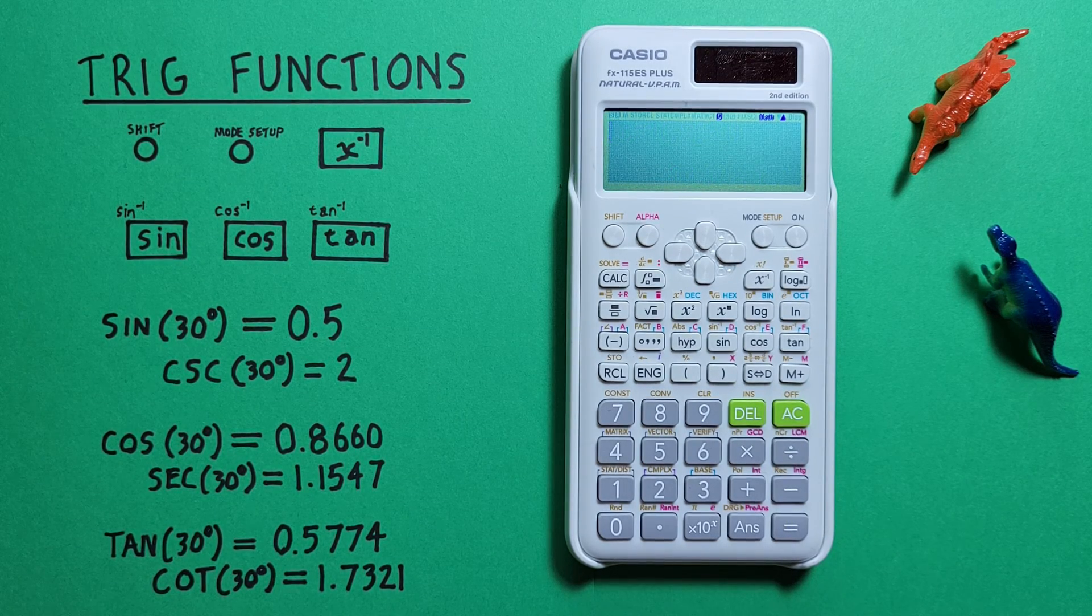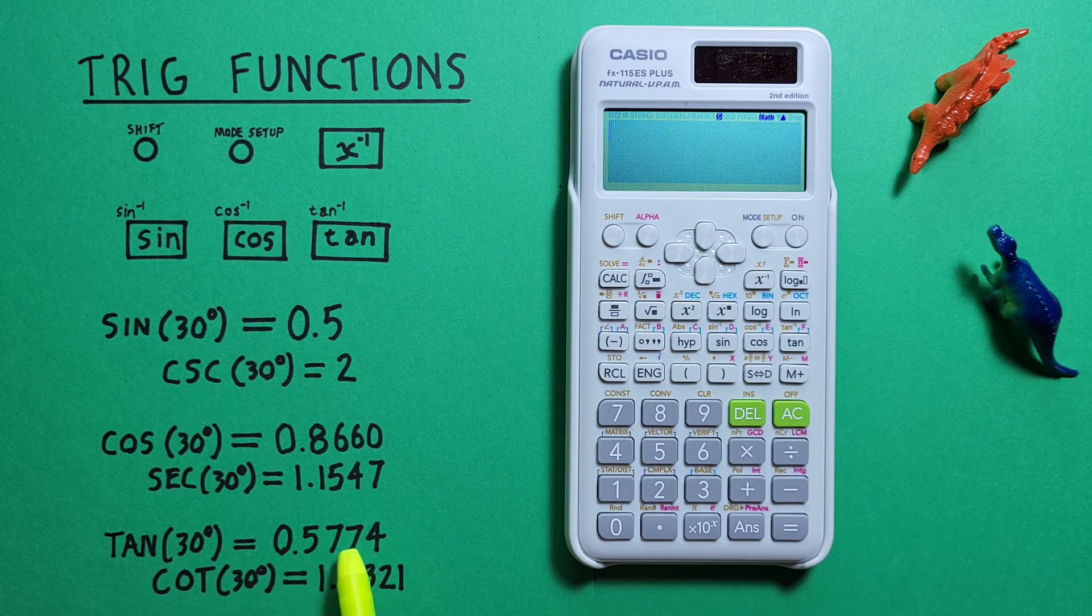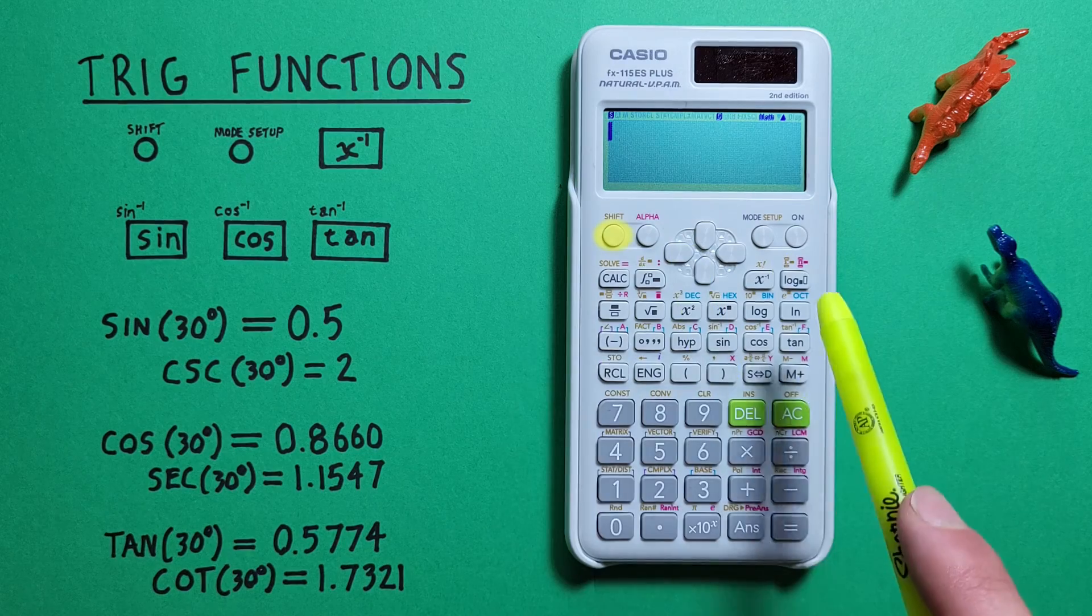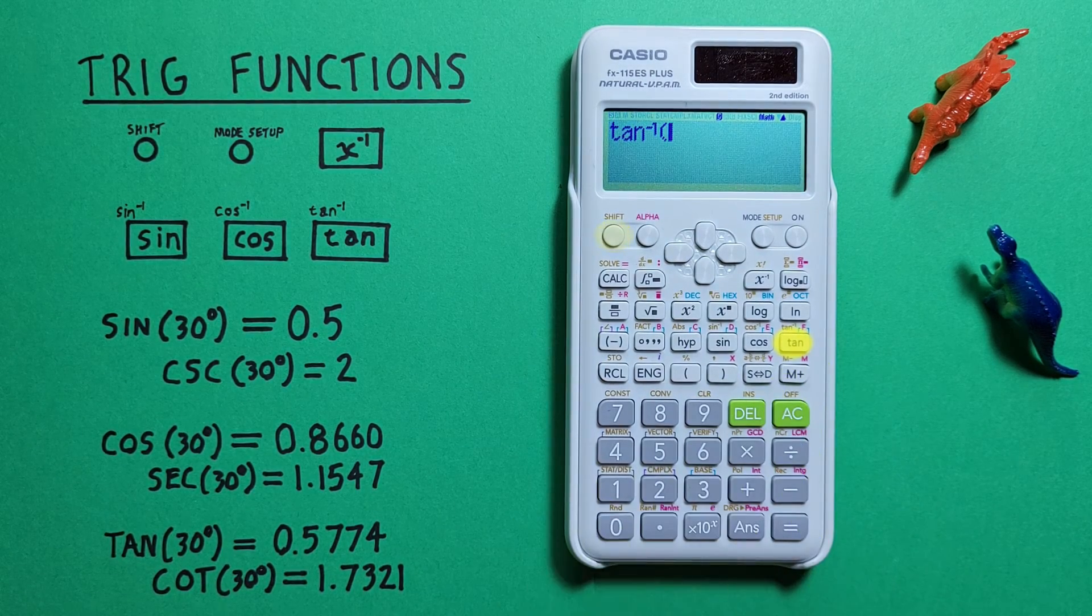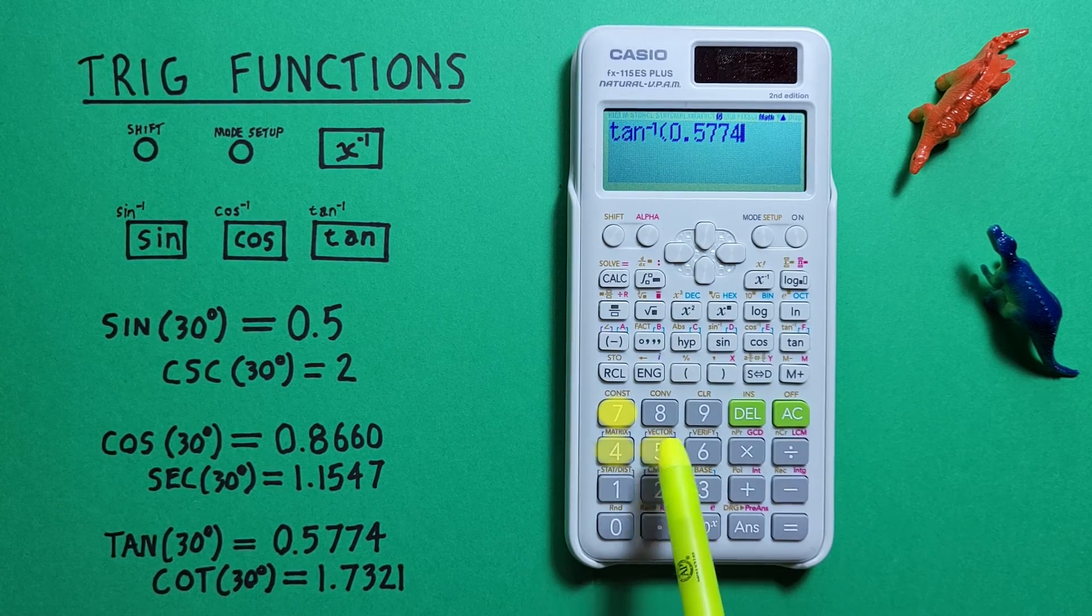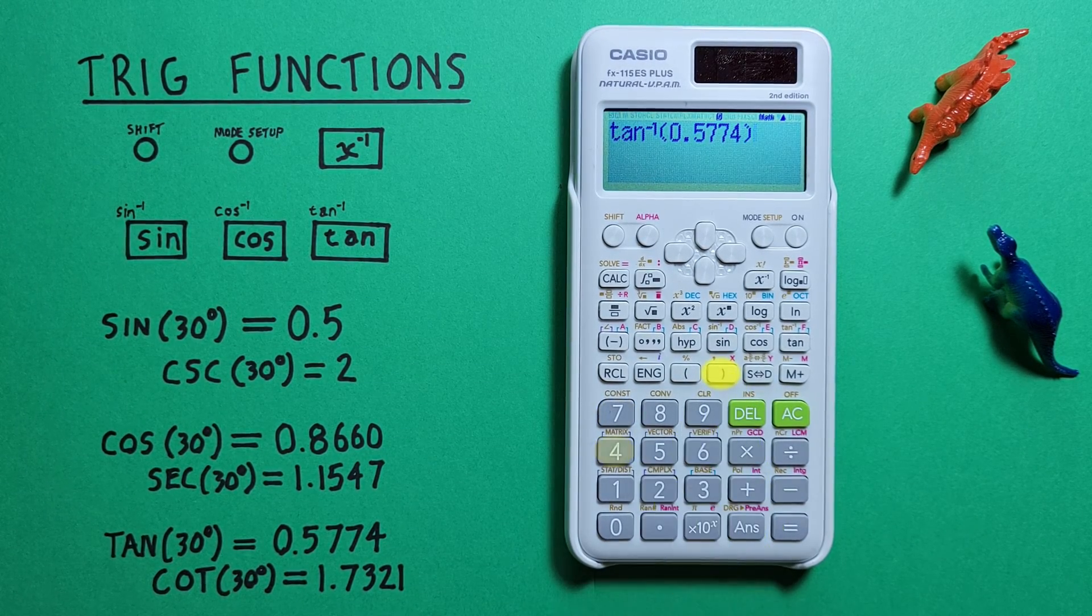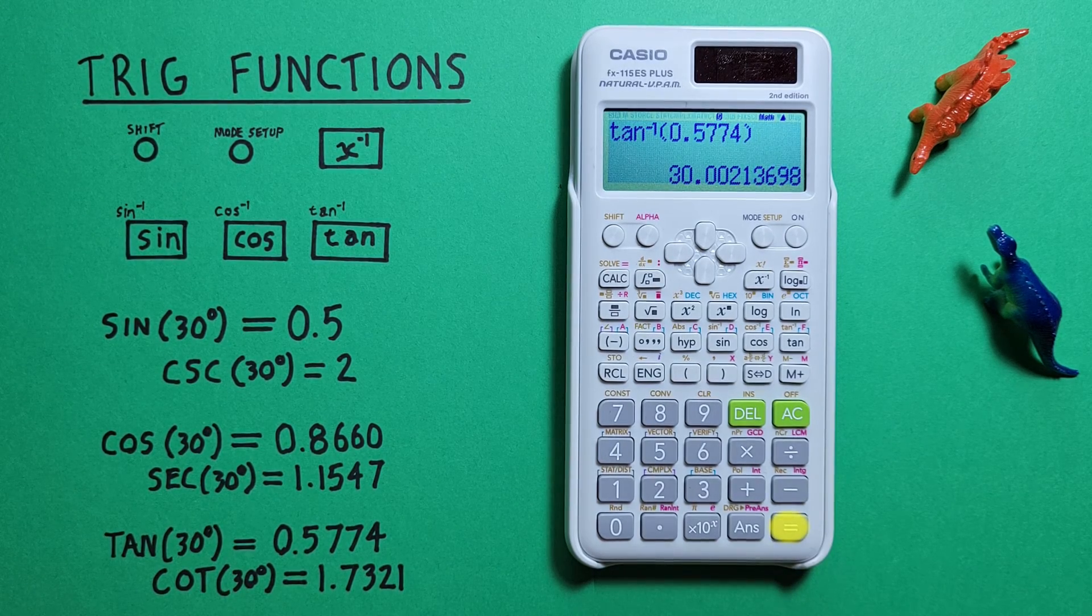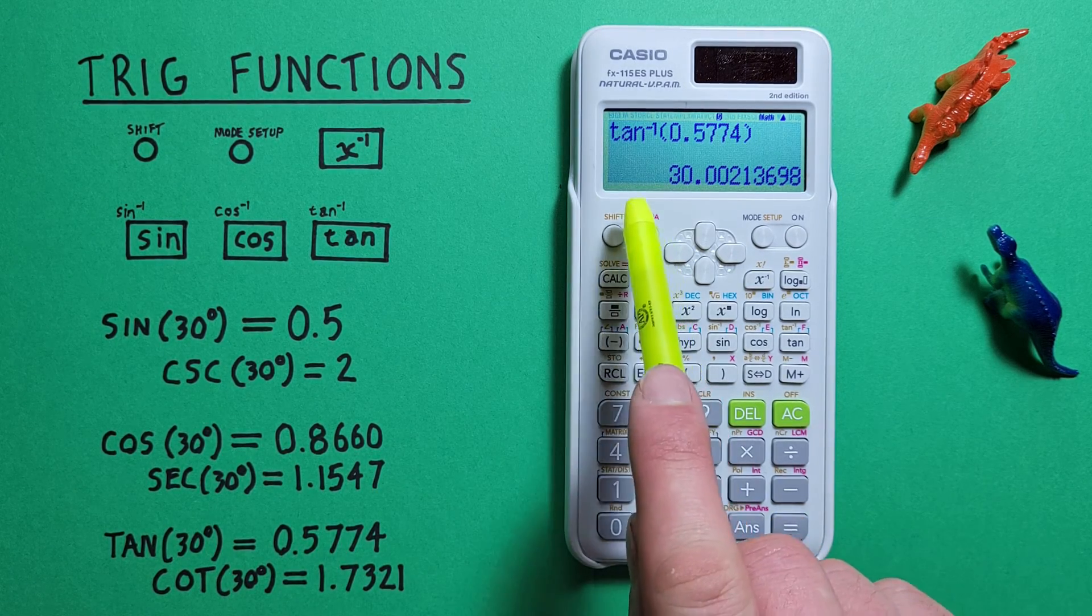For arc tan, we'll use our rounded result of 0.5774, so we press shift tan, 0.5774, close our bracket, and press equals, and again, we get what would round to 30 degrees.